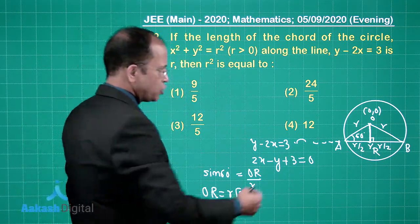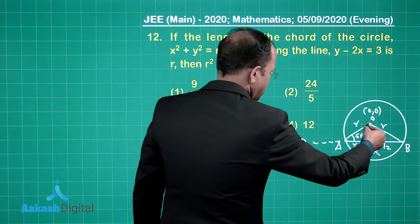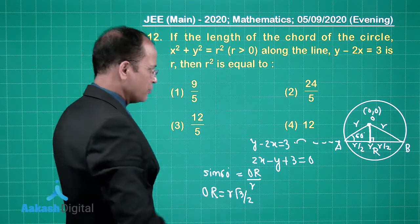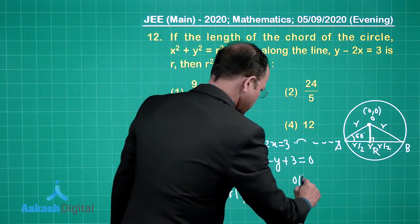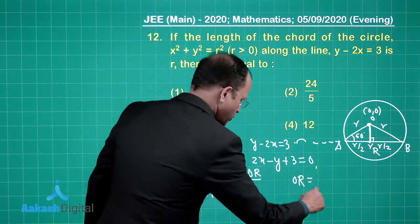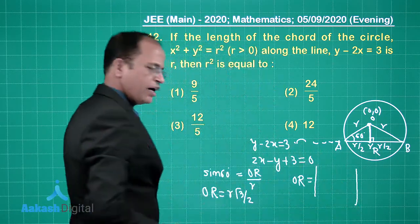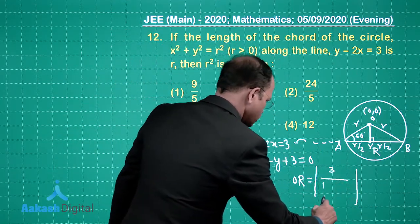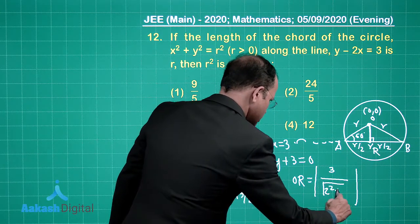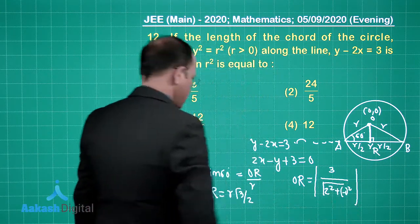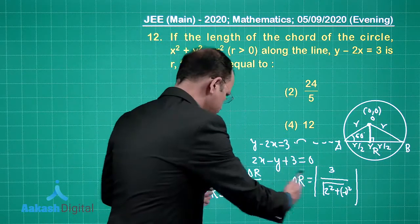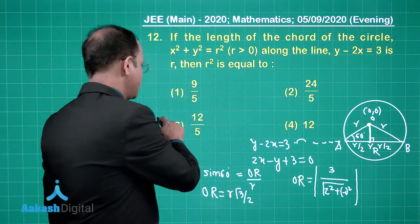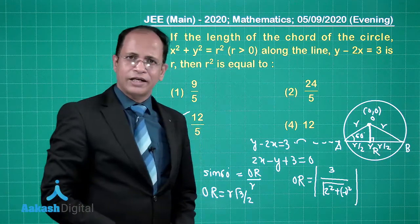Using the perpendicular distance formula from (0,0) to the line 2x - y + 3 = 0, the distance OR = 3/√(2² + (-1)²) = 3/√5. Equating this to r√3/2 and solving gives the third option as the correct answer.